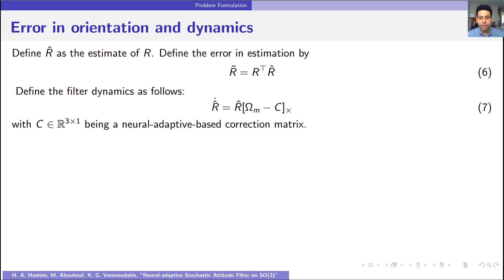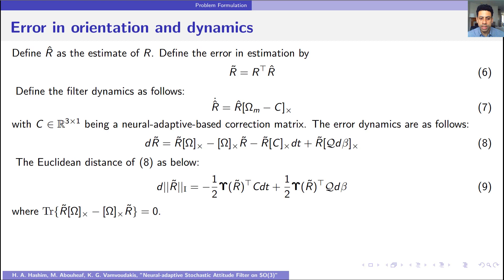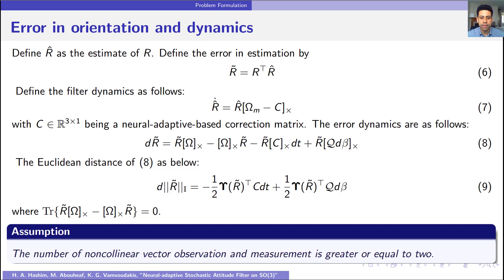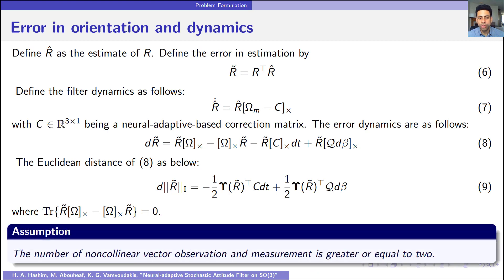This way we can obtain the error dynamics as follows. Also, the Euclidean distance of attitude error can be defined as follows. It's important to note the following assumption: the number of non-collinear vector observations in the measurement in this work is considered to be greater than or equal to 2.